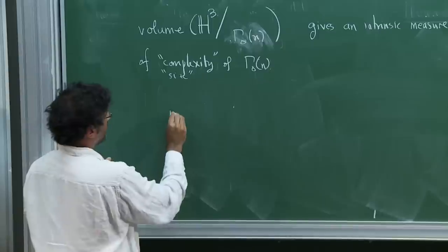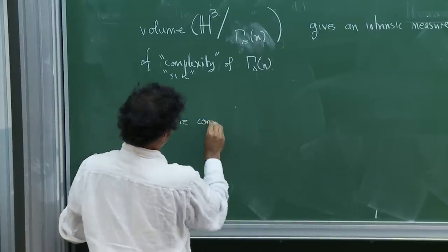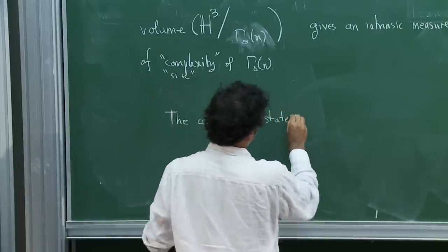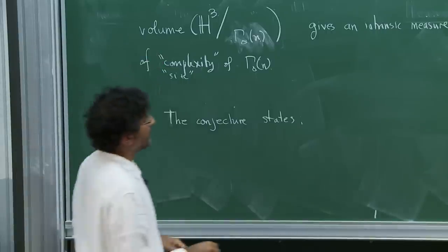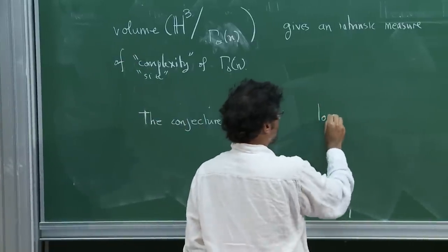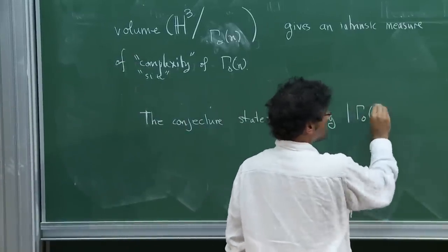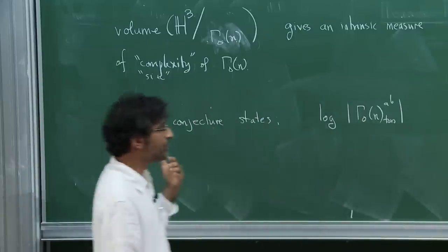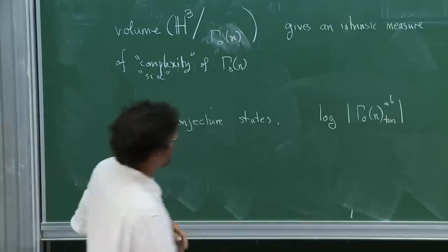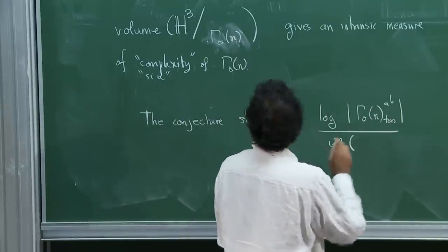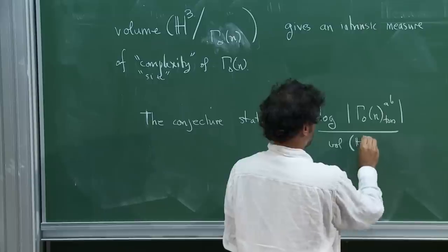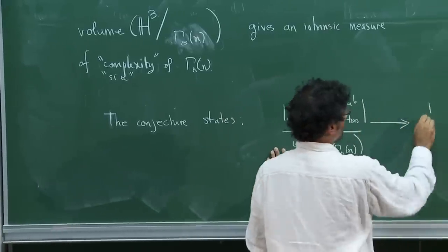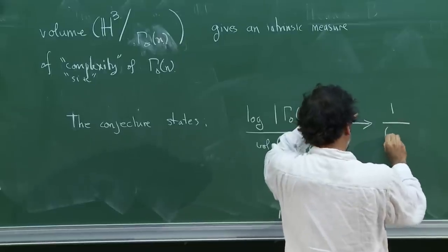In terms of this volume, I stated a conjecture last time — let me rewrite it in slightly more generality. The Bergeron-Venkatesh conjecture states that if you take the logarithm of the size of the torsion part of the abelianization of Gamma_0(N), scaled not by N-squared but by the hyperbolic volume, this should go to 1 over 6 pi.